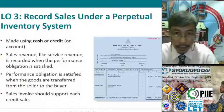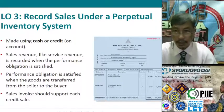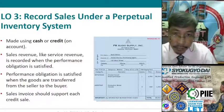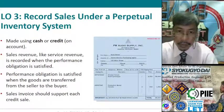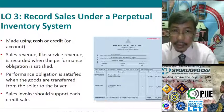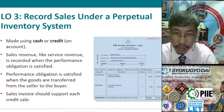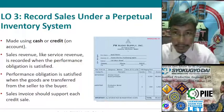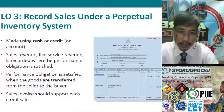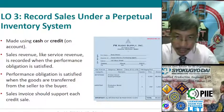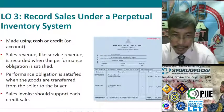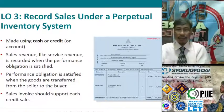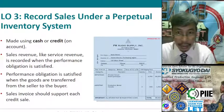Record Sales under a Perpetual Inventory System — this is made using cash or credit. Sales Revenue, like Service Revenue, is recorded when the performance obligation is satisfied, so when the goods are delivered and received by the buyer. Performance obligation is satisfied when the goods are transferred. A Sales Invoice should support each credit sale, so if the transaction is on account, the Sales Invoice is the document.